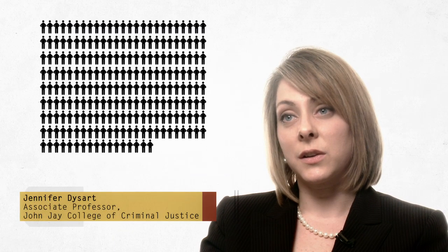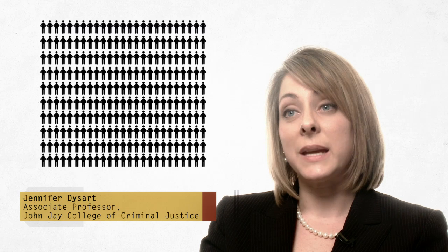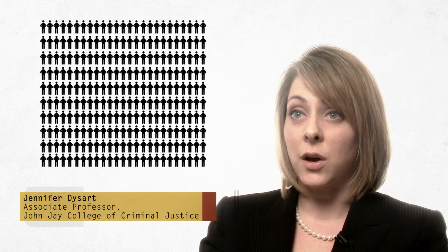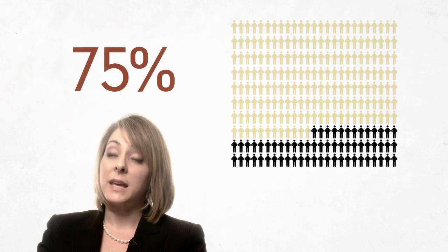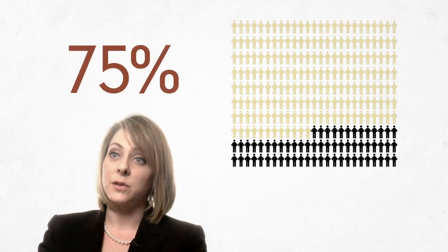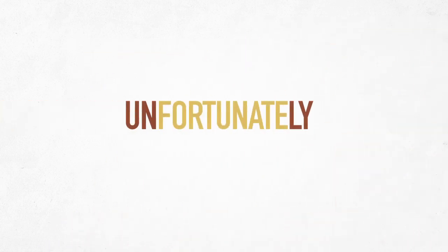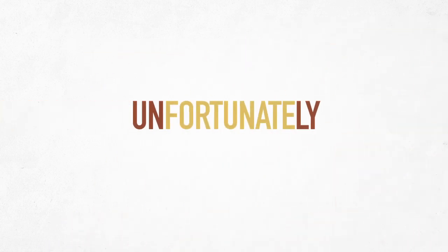More than 250 convicted prisoners have been exonerated on the basis of DNA testing in the U.S. alone. Eyewitness misidentification played a role in more than 75% of those cases, making it the leading contributing factor to wrongful conviction. But unfortunately, witnesses are often wrong. How can this happen? And is it possible for us to prevent these eyewitness identification errors from happening?